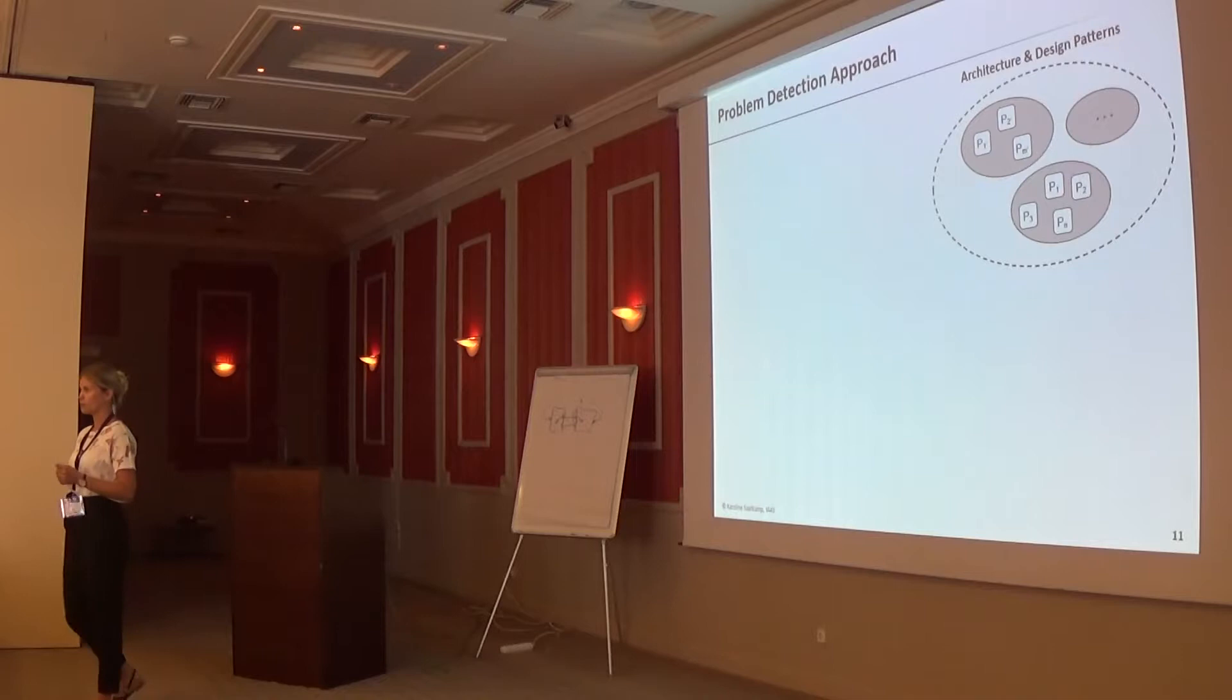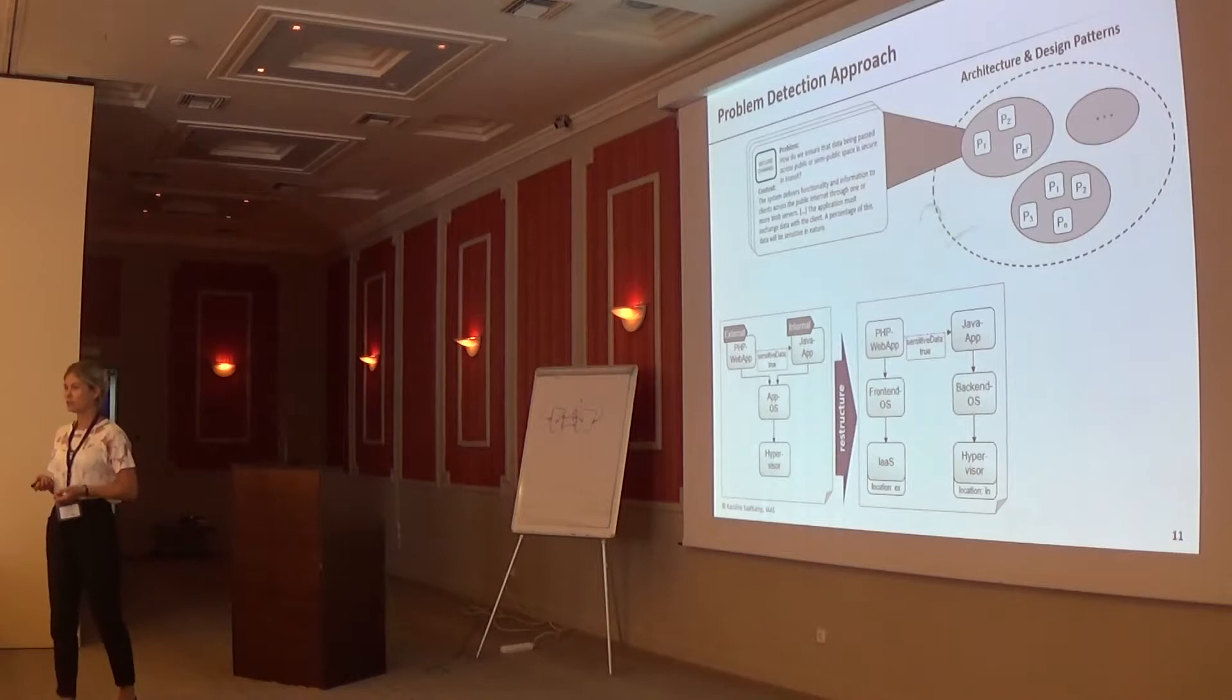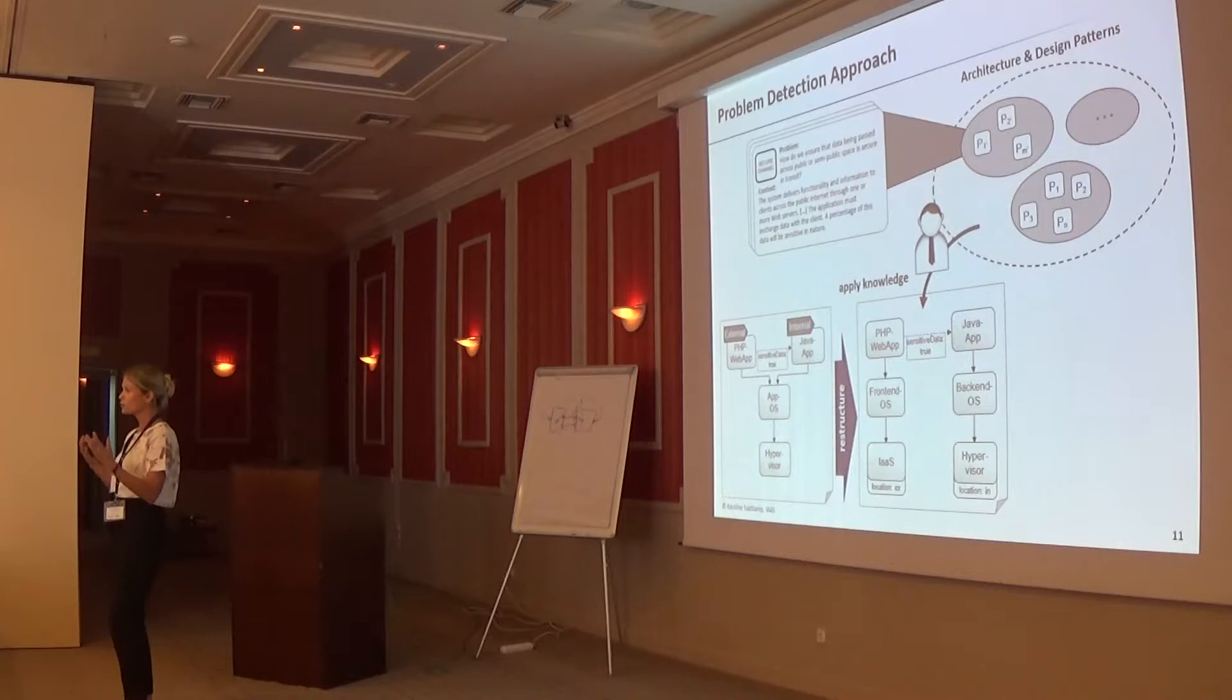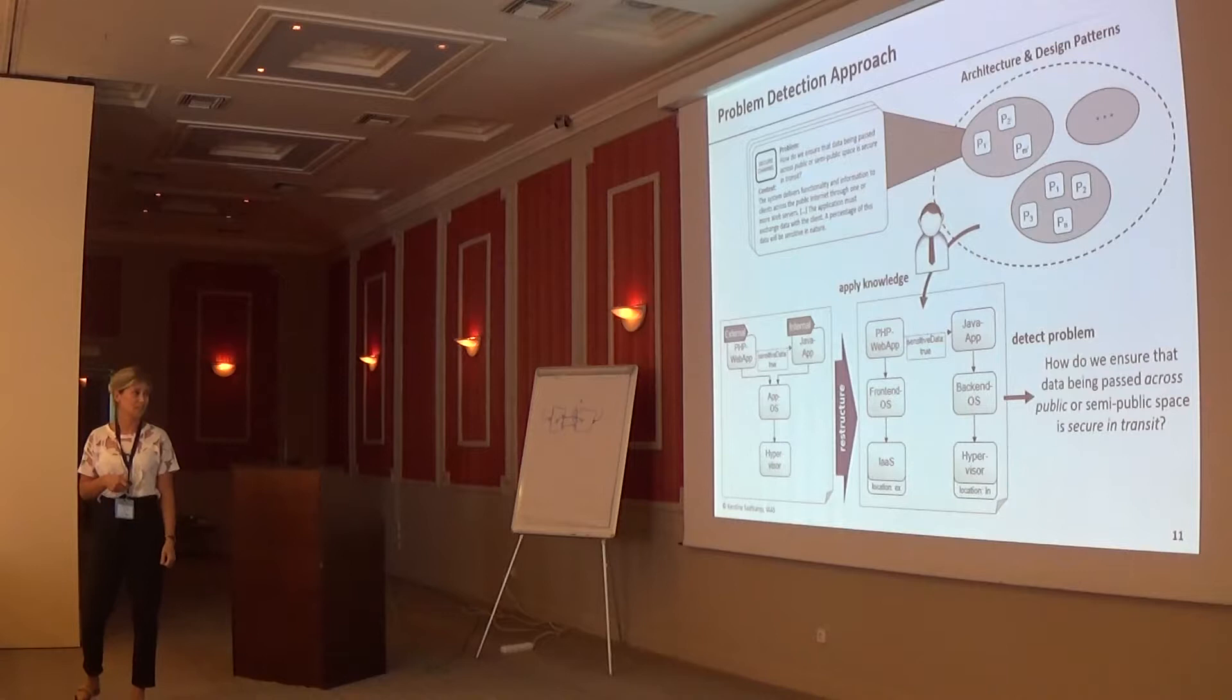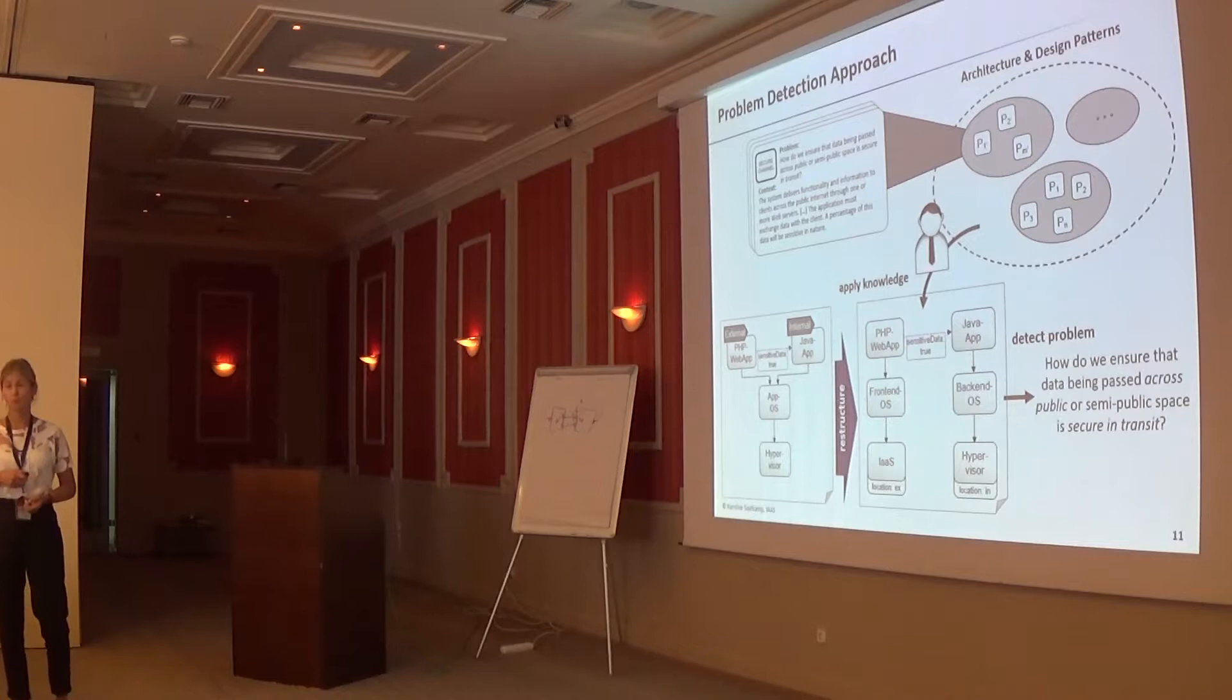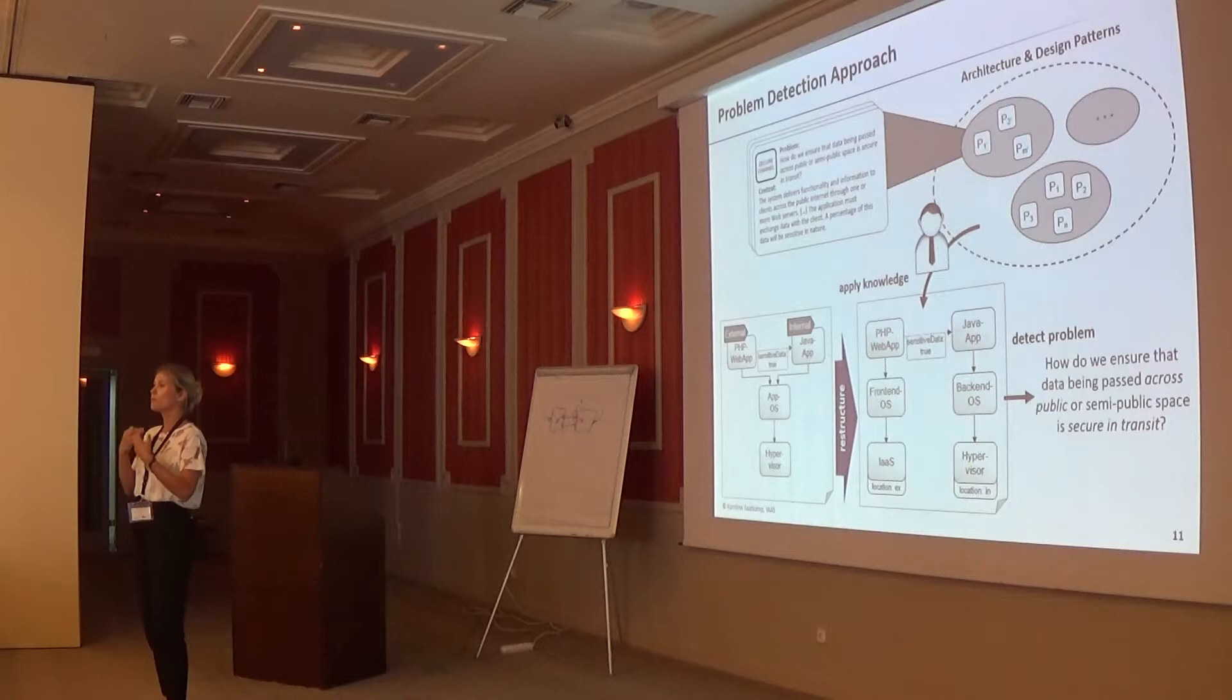We have these different patterns. We have our topology. We restructured the topology. We have all this knowledge in mind. We apply this knowledge - we've read all these books, we know what can occur, and then we can detect the problem. Here we detect the problem: these two stacks are in different locations, we have some sensitive data, but we can't find security mechanisms. So we think we have a problem. There are a lot of different patterns for different domains, so we have to know all of them. Our idea was to automate it - enable detecting problems automatically.